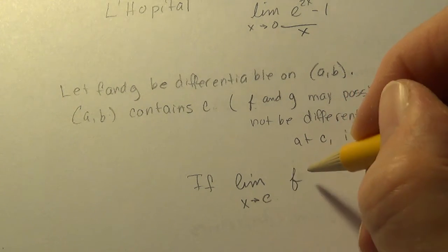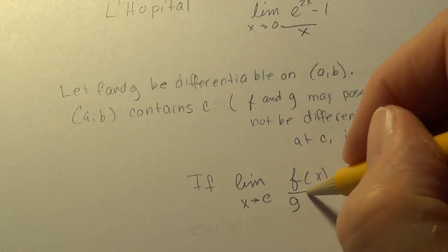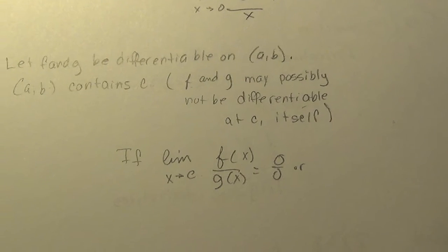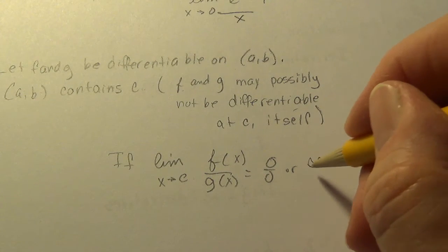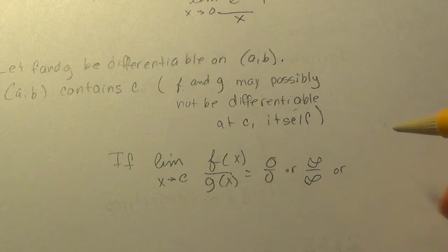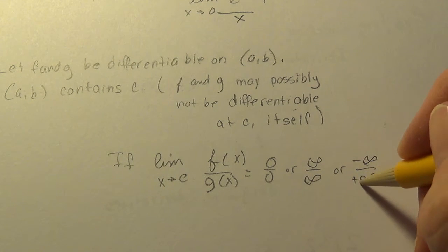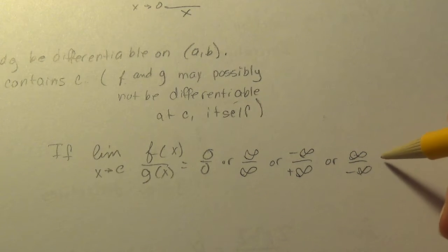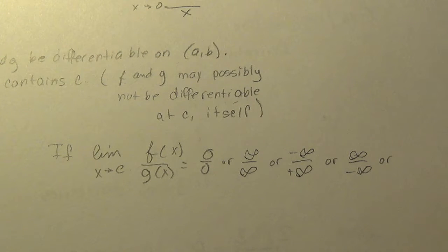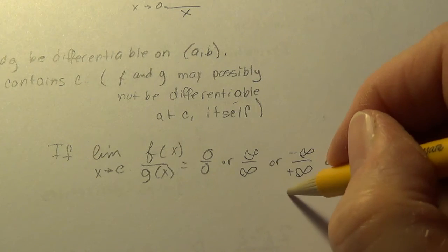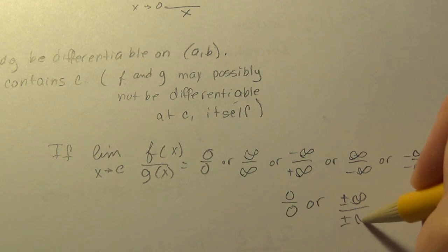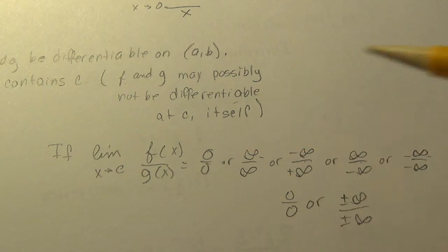All right, so if the limit as x approaches c of f(x) over g(x) equals 0 over 0, or infinity over infinity, or negative infinity over positive infinity, or positive infinity over negative infinity.